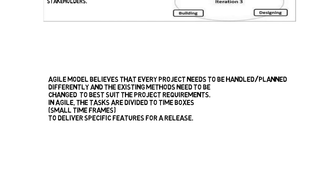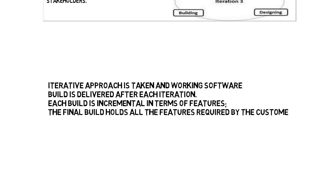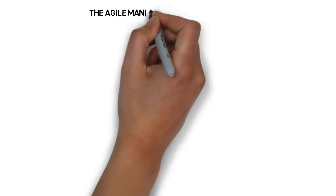The Agile model believes that every project needs to be planned differently and existing methods need to be changed to best suit the project requirements. In Agile, tasks are divided into time boxes — small time frames to deliver specific features for release. An iterative approach is taken and a working software build is delivered after each iteration. Each build is incremental in terms of features, and the final build holds all the features required by the customer.